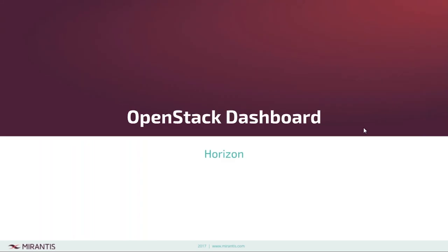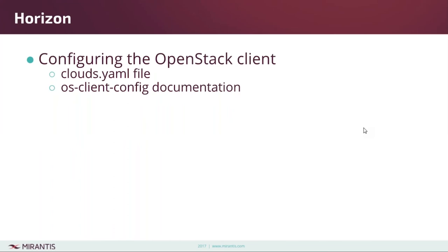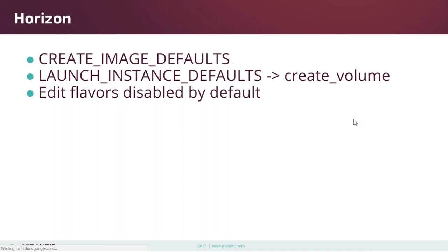Let's move on to Horizon, the OpenStack dashboard. As you know, Horizon lets you avoid having to do things on the command line. For lots of people Horizon is also a great place to get the openrc file — a file of environment variables that lets you easily configure the OpenStack clients. Now the community is moving toward the unified OpenStack client, which has its own config file called clouds.yaml, and in Pike you can now download that from the same screen as the openrc file.